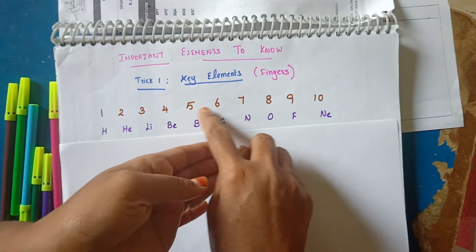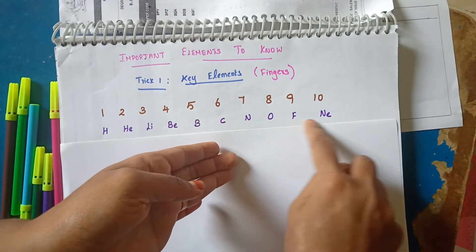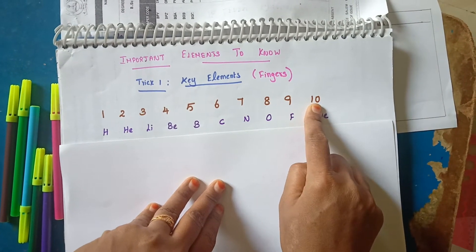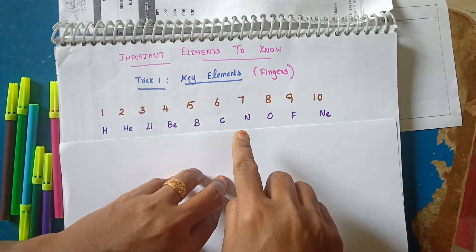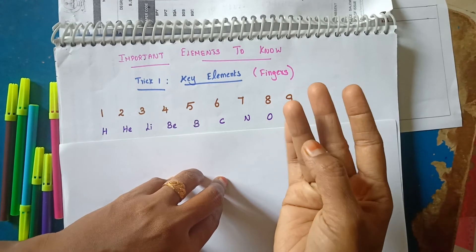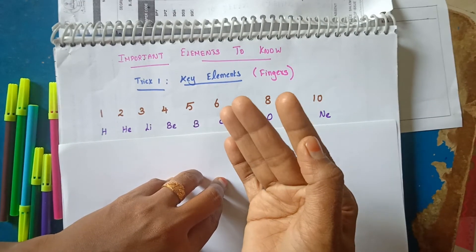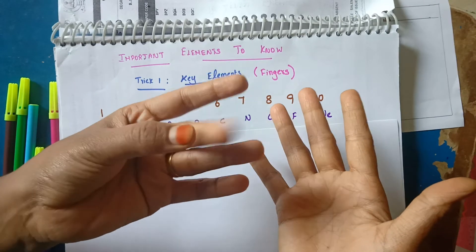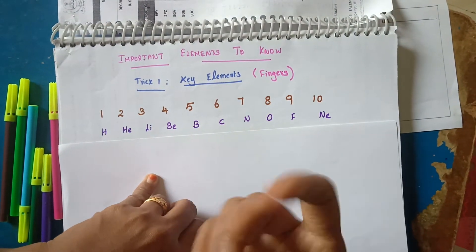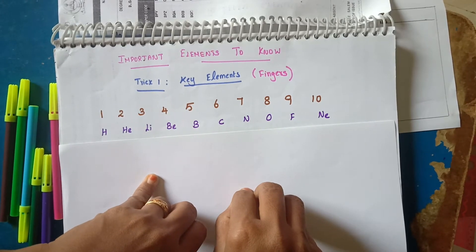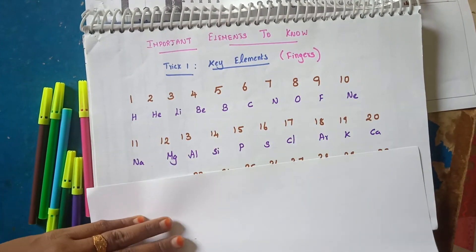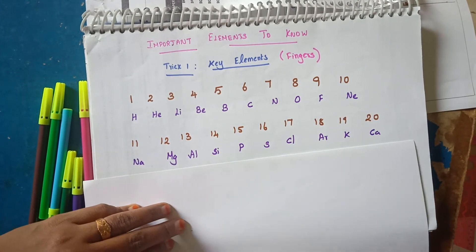If you know the serial number 1 to 10, you will be able to use the atomic number. Hydrogen, Helium, Lithium, Beryllium, Boron, Carbon, Nitrogen, Oxygen, Fluorine, Neon. If you practice this 10 times, you will be able to recall elements 1 to 10. So, 1 to 10 elements are done.